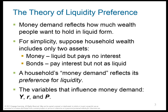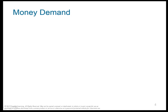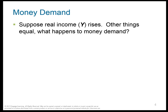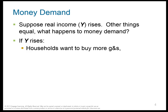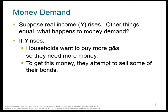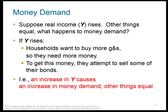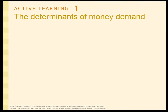Money demand is how much money households want to hold instead of bonds in their portfolio. What influences money demand? Y — real output — R, the real interest rate, and P, the price level. Suppose real income rises: people have more money, they want to buy more goods and services, so they need more money. To get this money, they sell some of their bonds, converting them into cash. So if Y goes up, money demand goes up, all other things being equal.